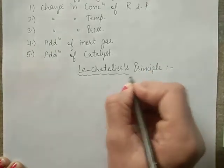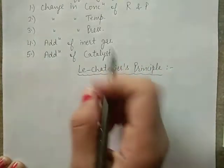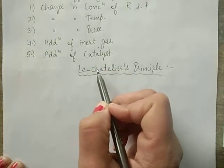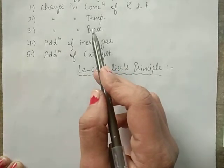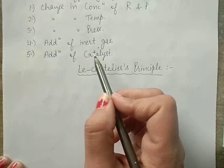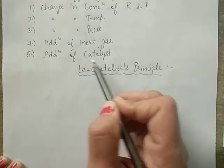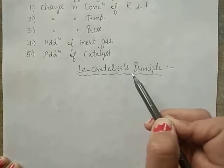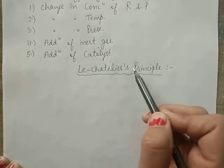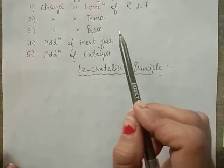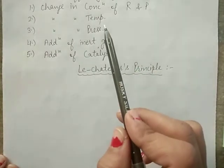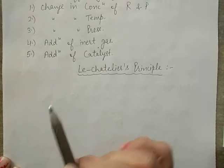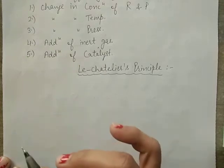According to this principle: if any of the factors that determine the equilibrium condition of the system — such as pressure, temperature, or concentration — changes, then the system will move in such a direction so that the effect of the change is reduced or nullified.